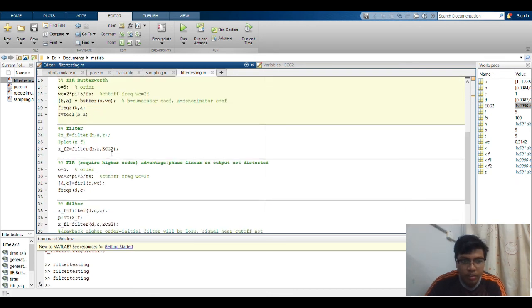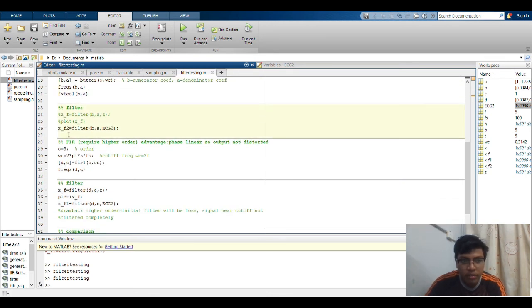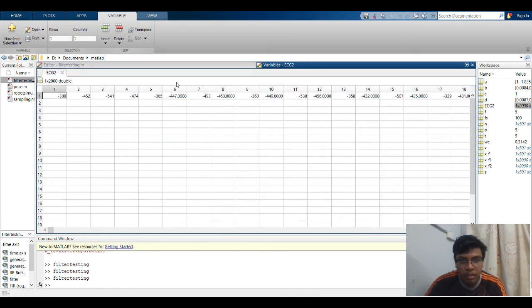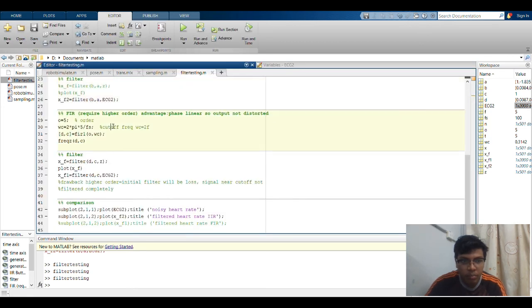And then we are looking here at the phase filter. We filter out the signal here, ECG2, data of the heart rate. And then lastly, we plot it.